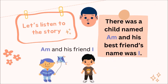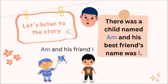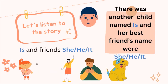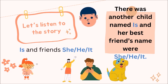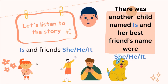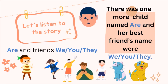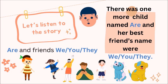The story goes like this. There was a child named Am and his best friend's name was I. There was another child named Is and her best friends were She, He, and It. The third child was named Are and their best friends were We, You, and They.